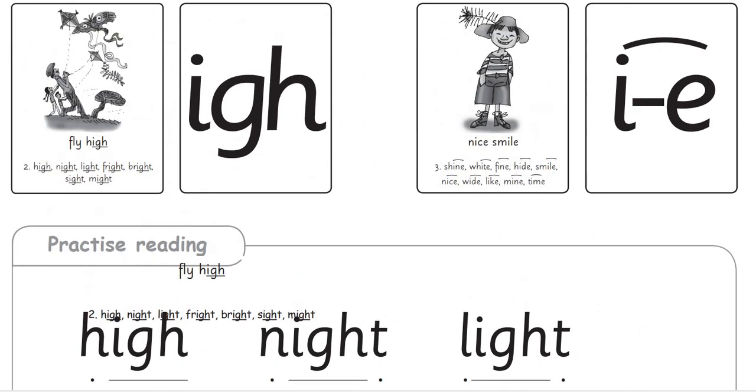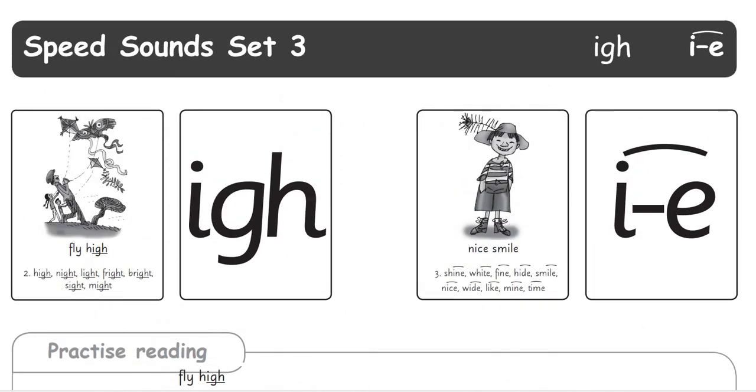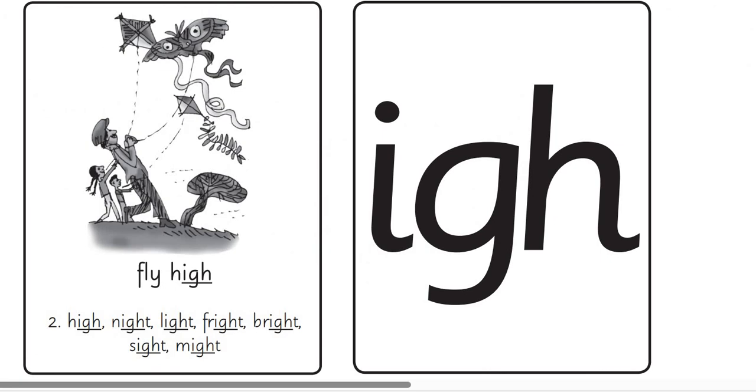Now, let's do the easy word. I-G-H. This is in set 2, not set 3. This is fly high. There's something wrong with the word fly. It's because of the Y. It sounds like an I. I and G and H.